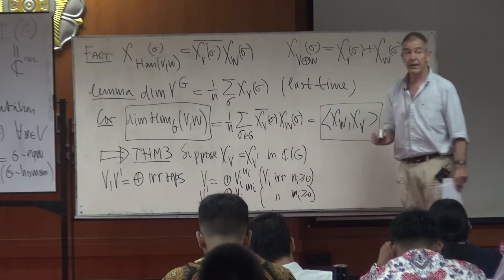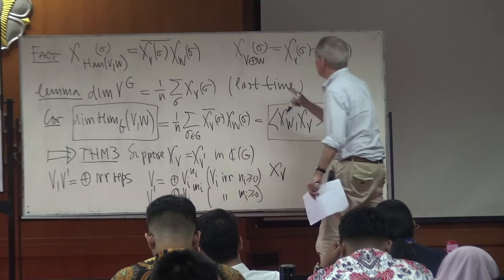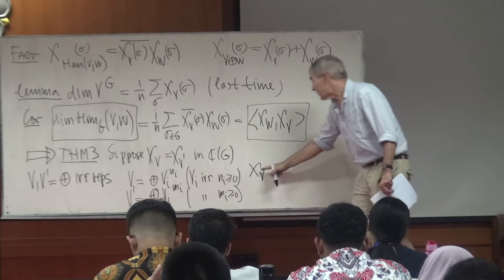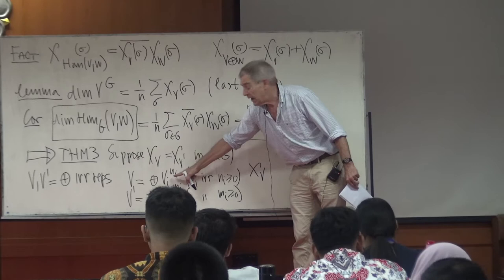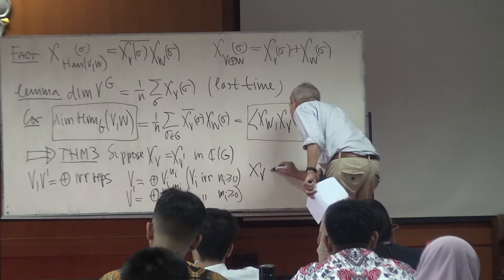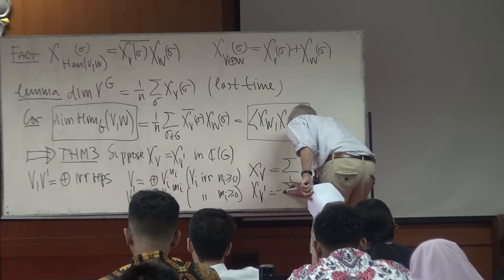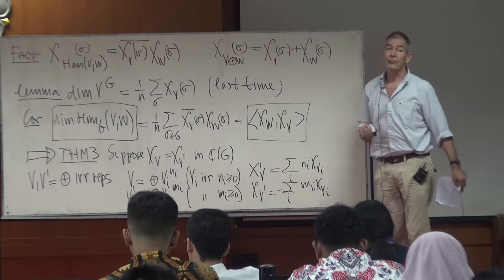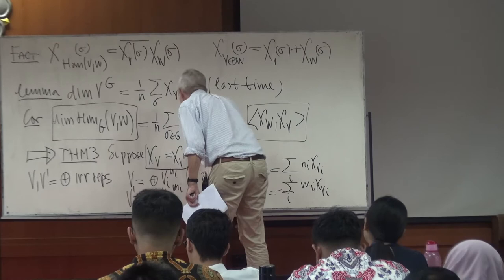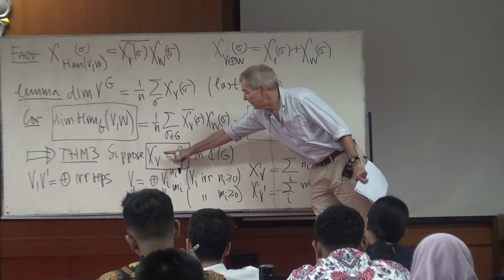What is the character chi_V? Using the formula that the character of a sum is the sum of the characters, chi_V equals the sum over i of n_i times chi_{V_i}, since the i-th component occurs n_i times. And chi_{V'} equals the sum over i of m_i times chi_{V_i}. Now I assume that the characters are the same and compute the scalar product of this character with one of the chi_{V_j}'s.